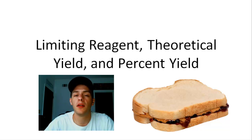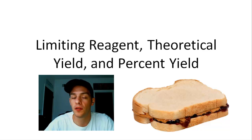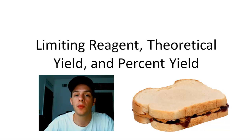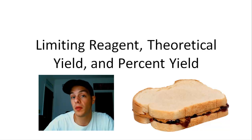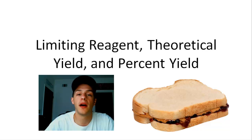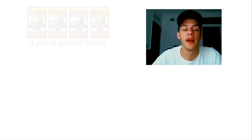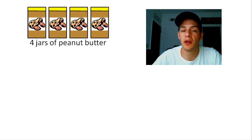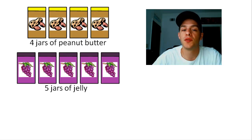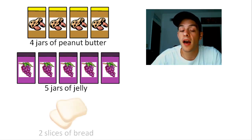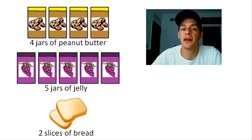Suppose I was walking around my kitchen and I had a sudden craving for peanut butter and jelly sandwiches. And suppose I was so hungry that I wanted to make as many as I could. So the next step would be to look around the kitchen and find out how much peanut butter, jelly, and bread I have. I find that I have four jars of peanut butter, five jars of jelly, but I only have two slices of bread.